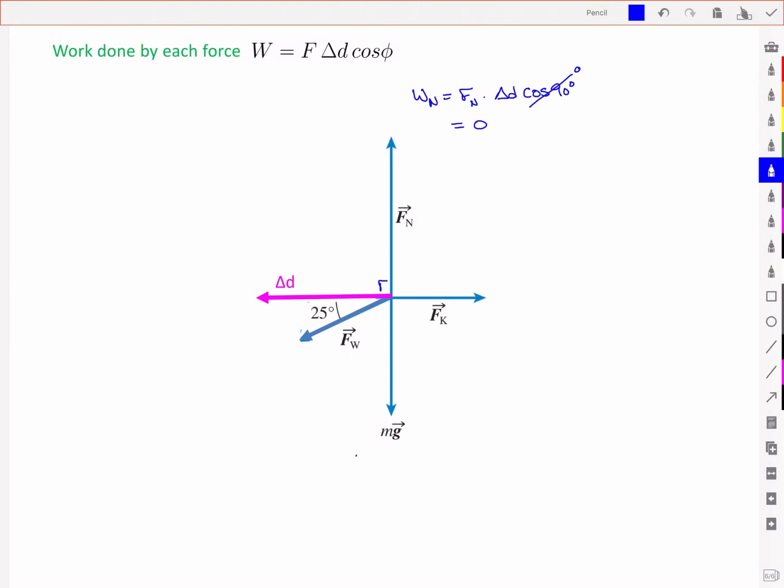Work due to gravity in a similar fashion then is going to be the gravitational force, mg, the delta D, and again a cos of 90 degrees. So that one will again be equal to zero.